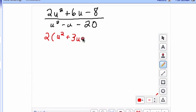And then I take 2 times what gives me a negative 8, and that would be a negative 4.